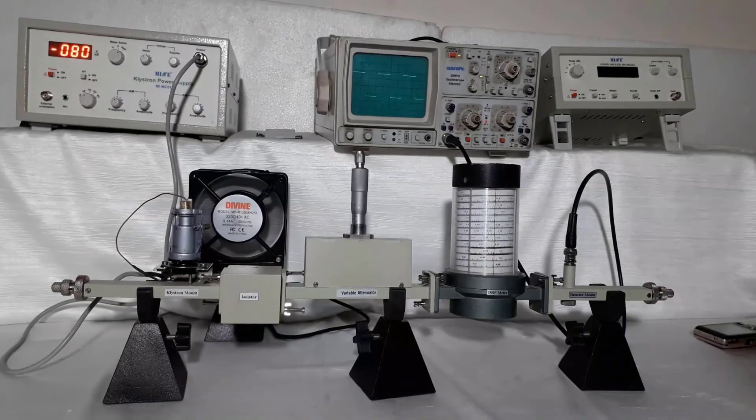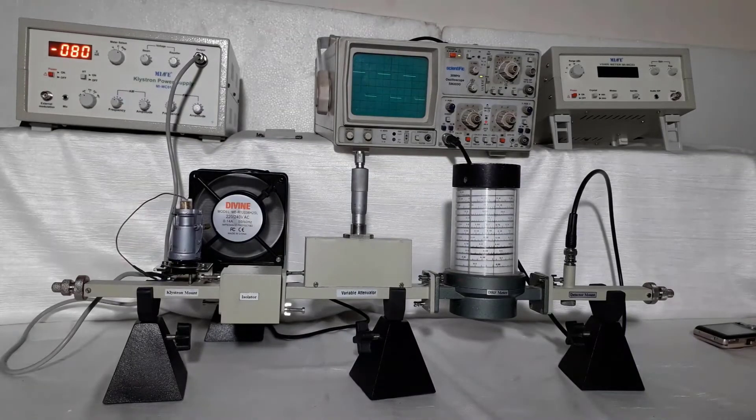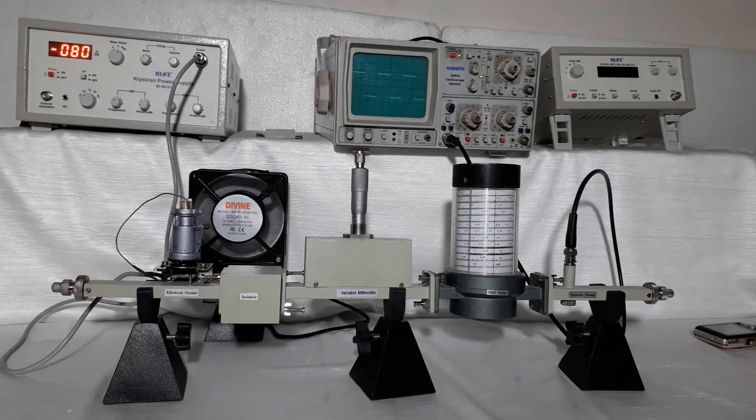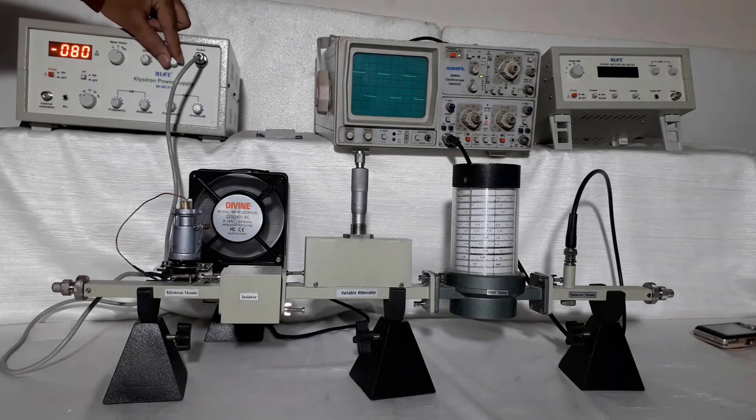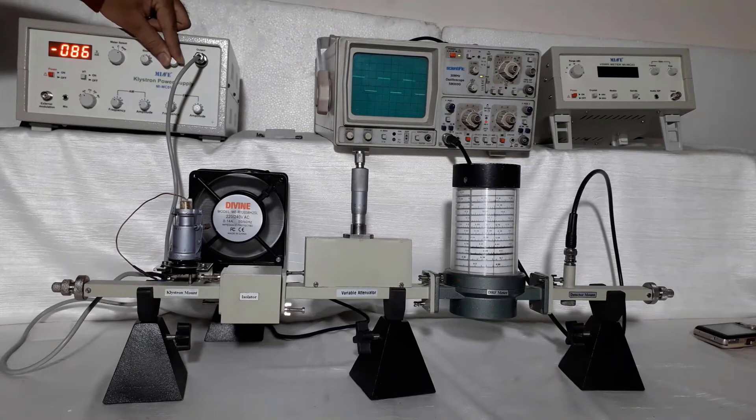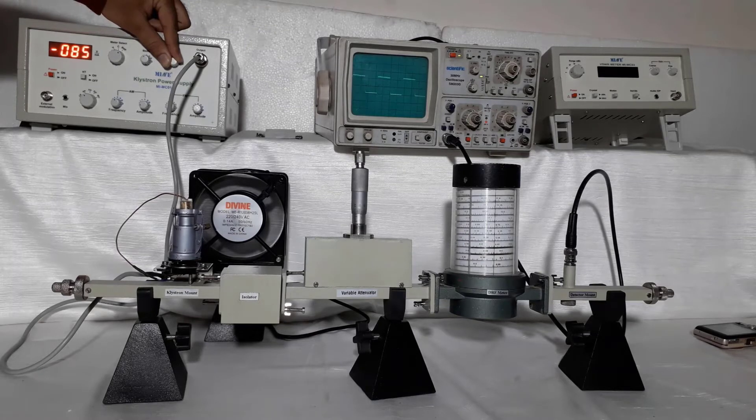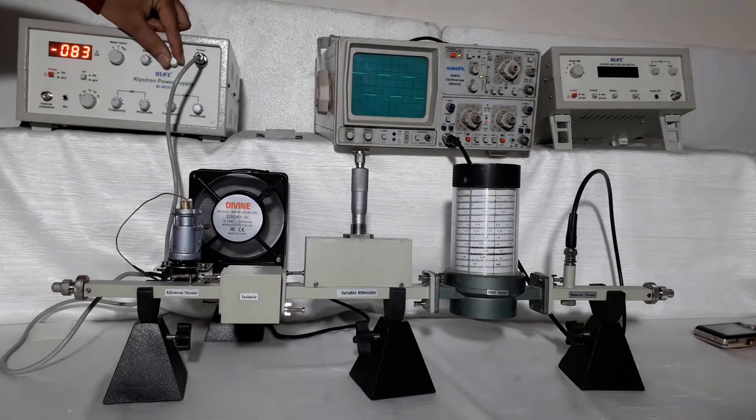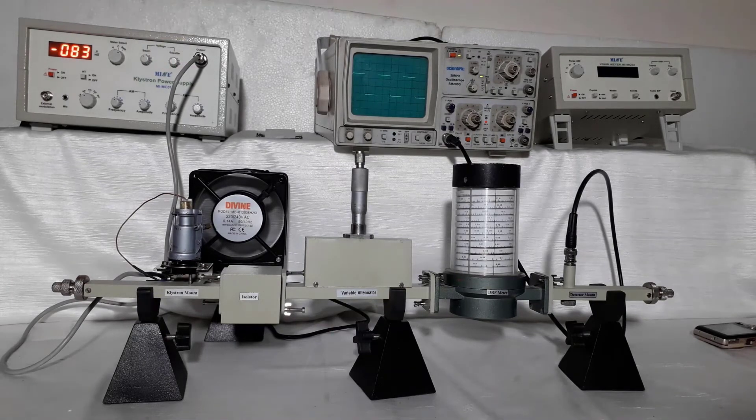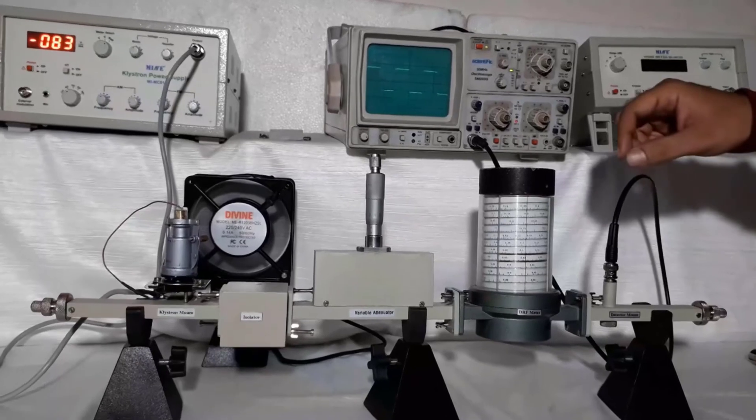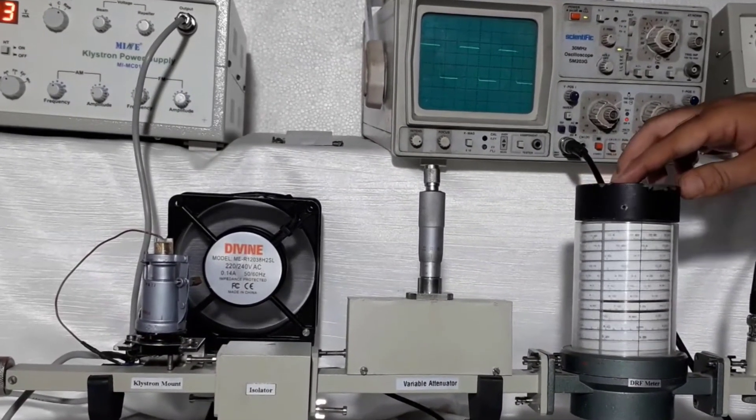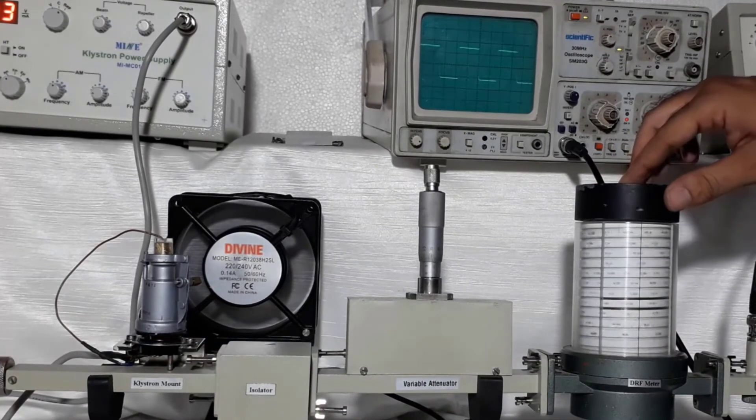Now you will have to find out two more points of repeller voltage. For this purpose, just increase repeller voltage by plus 5 to 10 volts. You will find that square wave amplitude is low as compared to amplitude of square wave which we got at center point. Now measure the frequency of microwave at this point and note down values of frequency and repeller voltage.